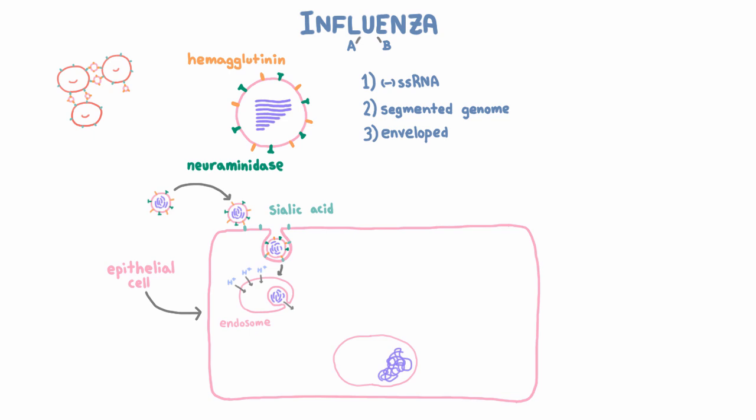Influenza A actually has an M2 ion channel that allows H-plus ions to enter the virus itself and facilitates this whole fusion process. I'm mentioning this M2 protein because there's a drug that targets it that we're going to talk about.